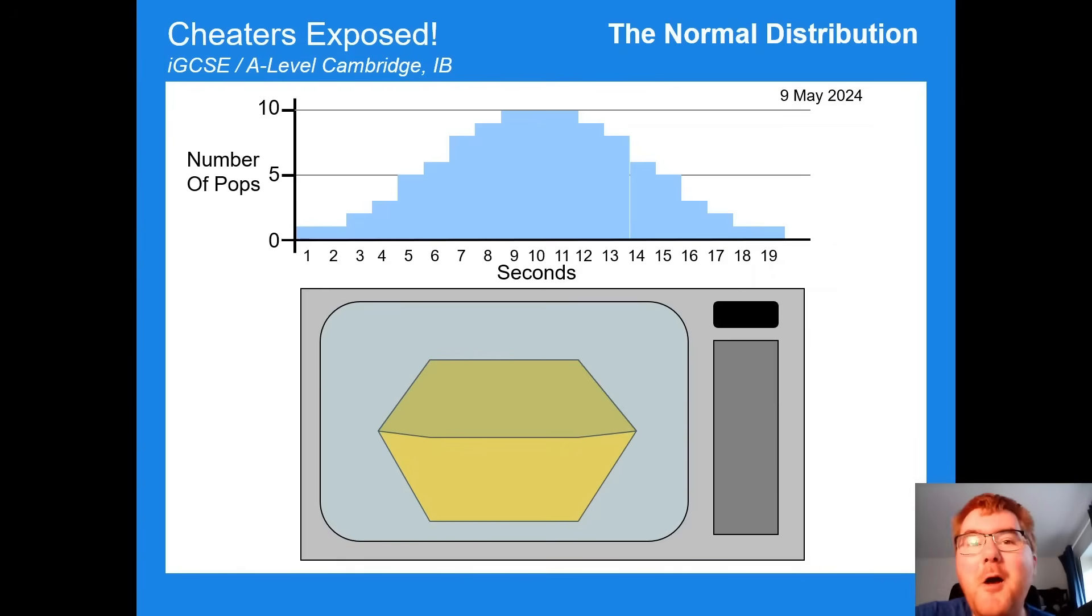And we've made it. So we've exploded all the popcorn, at least hopefully. And notice the shape of the graph. Most of the pops are actually happening in this middle section between, say, 7 seconds and 13 seconds. And we have this kind of shape. So if I draw a line actually on these corners, we know we have this so-called bell curve shape here of the pops of popcorn.